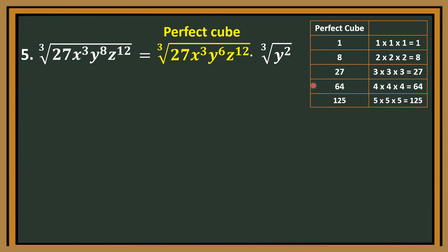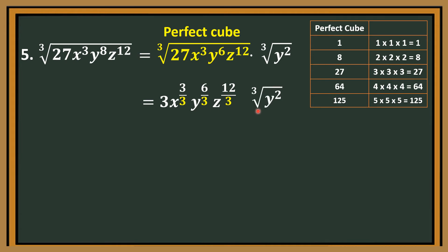So we have cube root of 27 times x cubed times y to the sixth power times z to the twelfth power — these are the perfect cube factors. The other factor is cube root of y squared, because we reduced the exponent from 8 to 6 by 2. Cube root of 27 is 3. Dividing exponents by the index 3: x to the third over 3 is x, y to the sixth over 3 is y squared, z to the twelfth over 3 is z to the fourth. So the final answer is 3x y squared z to the fourth times the cube root of y squared.